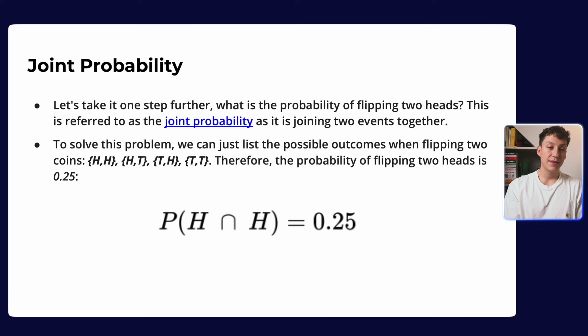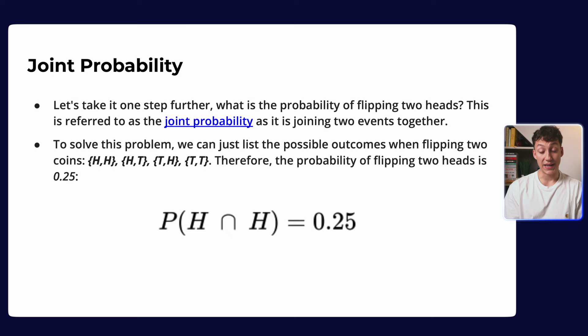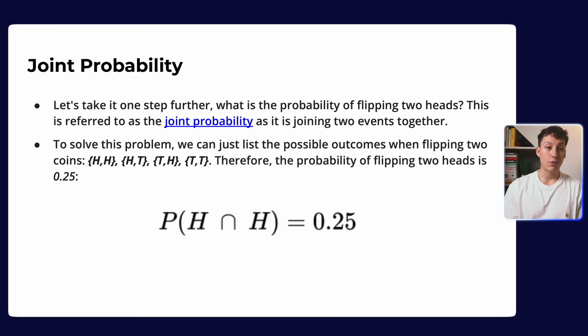We can extend that view with something called joint probability — the probability of flipping two heads together. There are four different outcomes: two heads, head then tails, tails then head, or two tails. Because flipping two heads is one out of four total outcomes, the probability is 25%. Equivalently, 0.5 times 0.5 equals 25%. Joint probability is simply the probability of two events happening together.